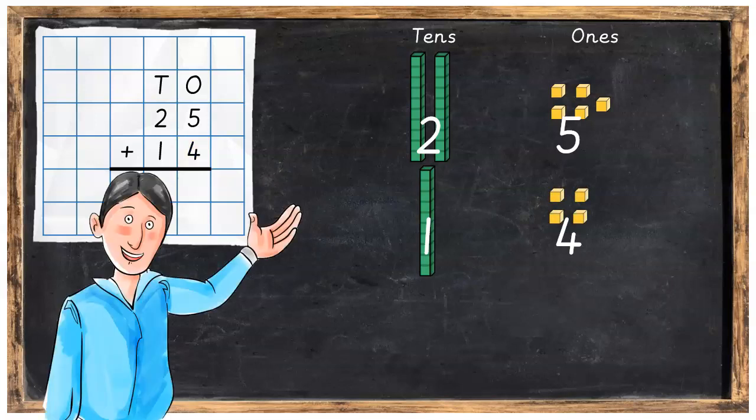What I would like you to do now is set out your Dienes blocks just like this, creating the 25 on top and the 14 directly underneath it. Press pause and then press play when you are ready and you've got it done.